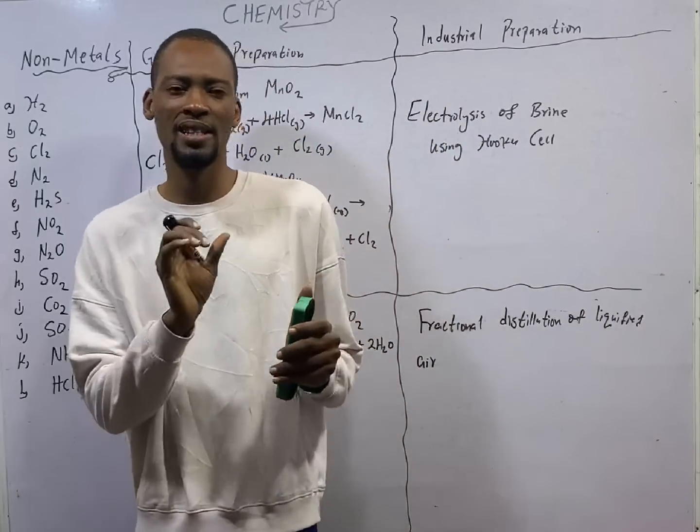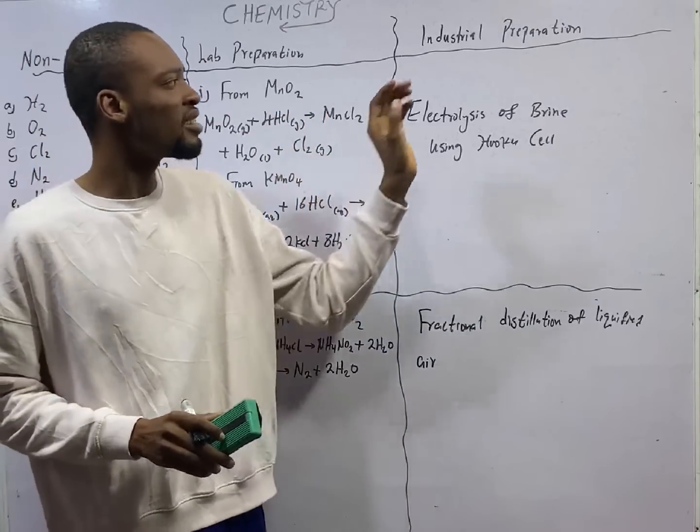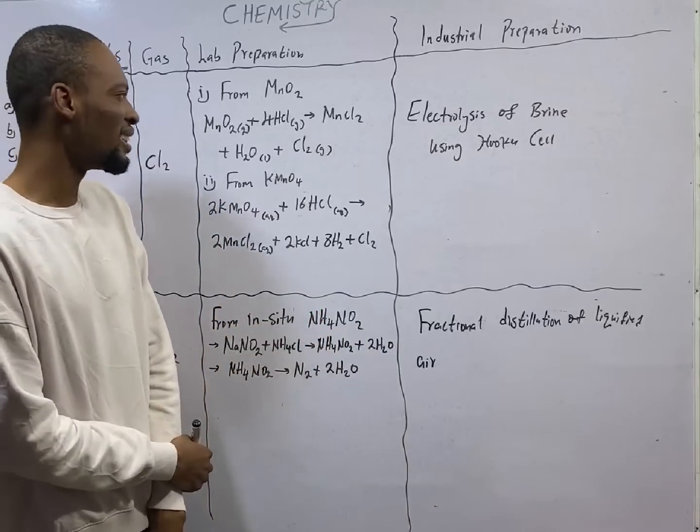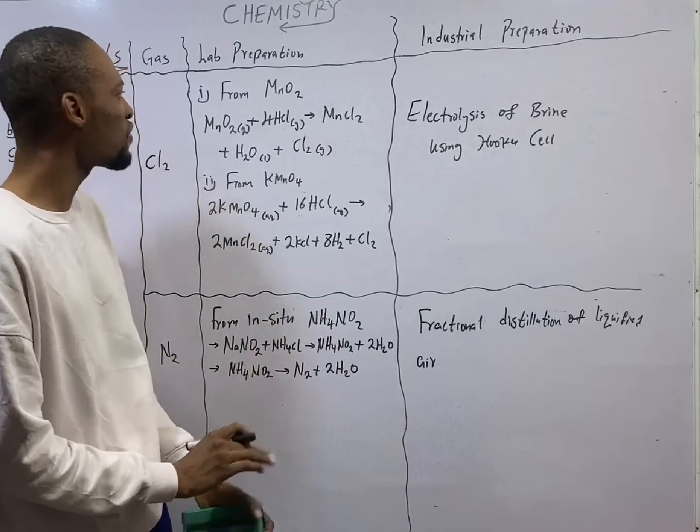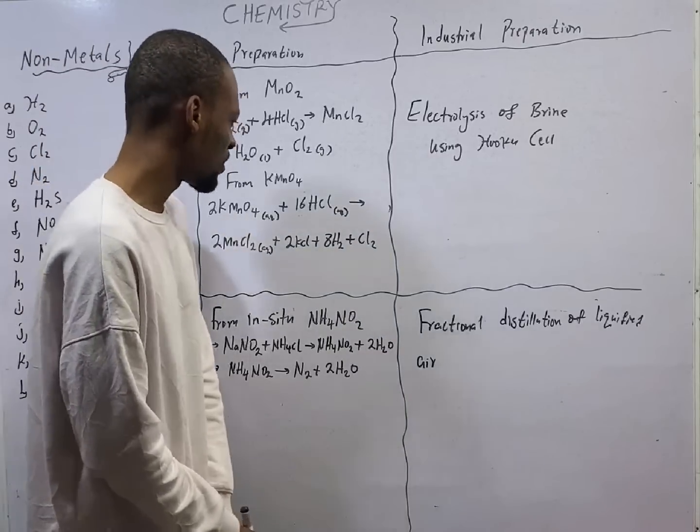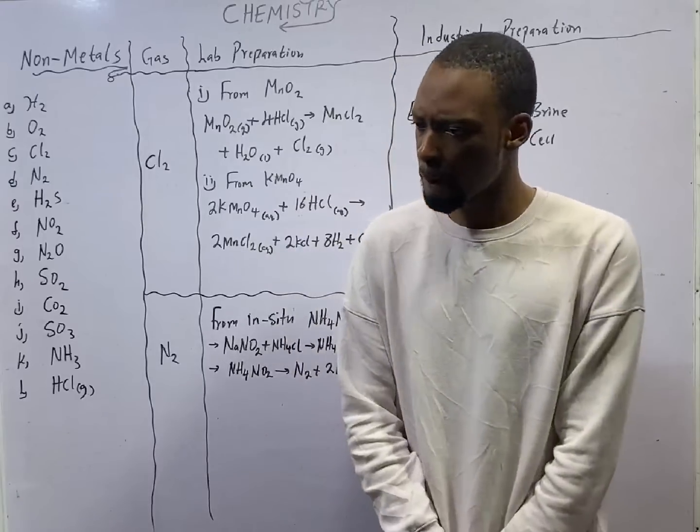Ladies and gentlemen, chlorine and nitrogen gas can both be prepared in the laboratory and in the industry. To prepare chlorine gas in the lab, we can get it from manganese dioxide and potassium tetraoxomanganate or potassium permanganate.